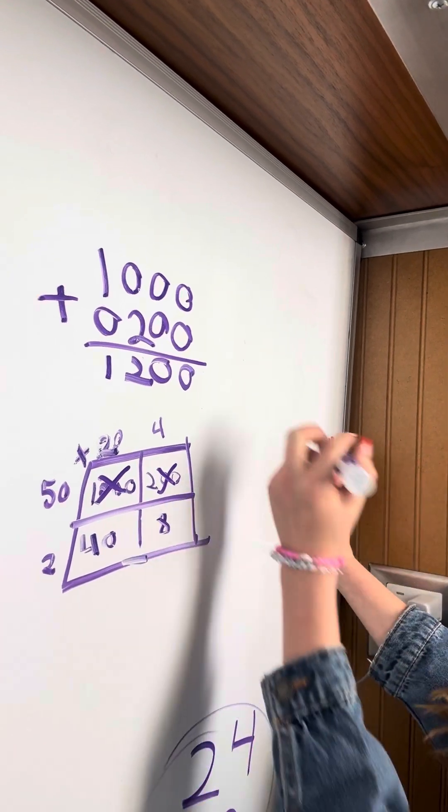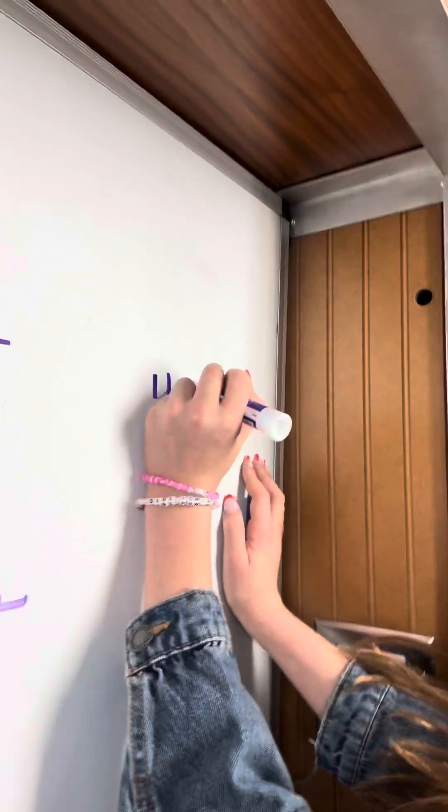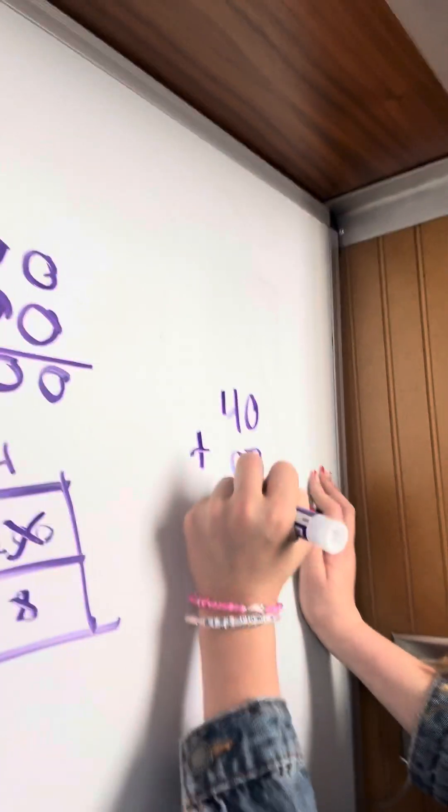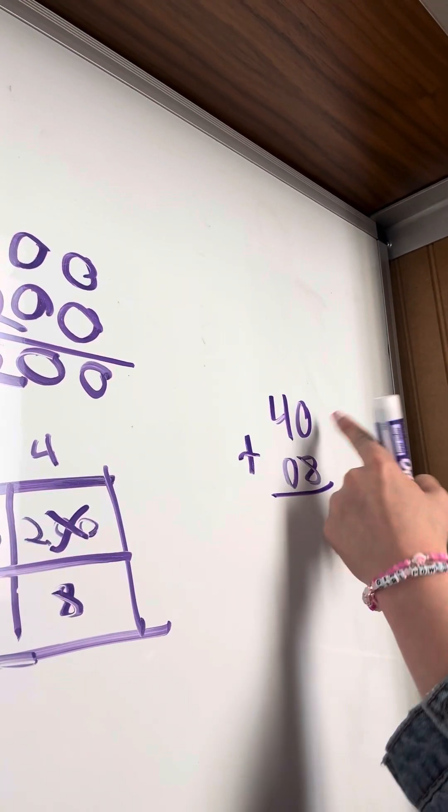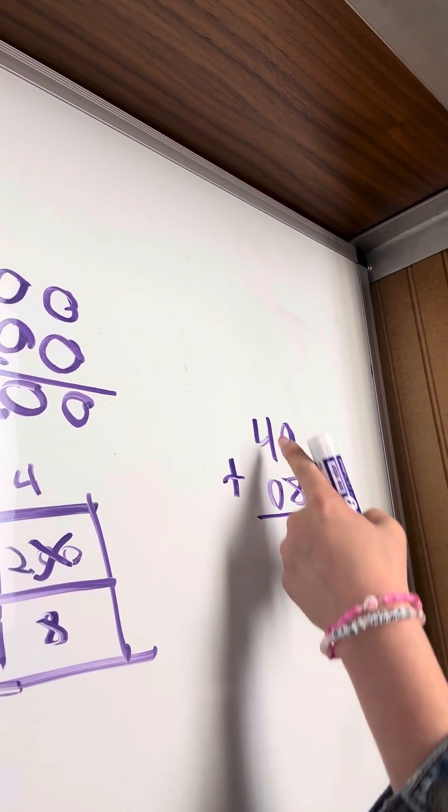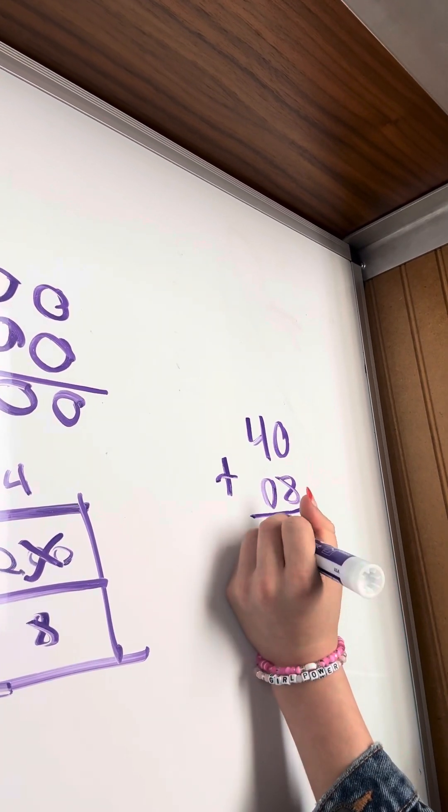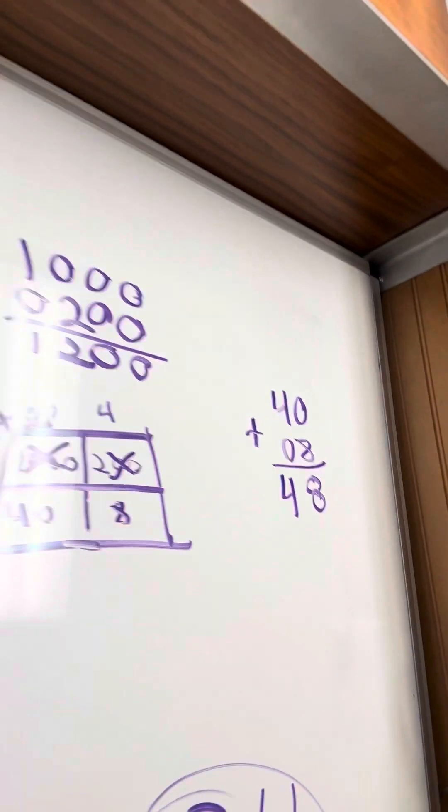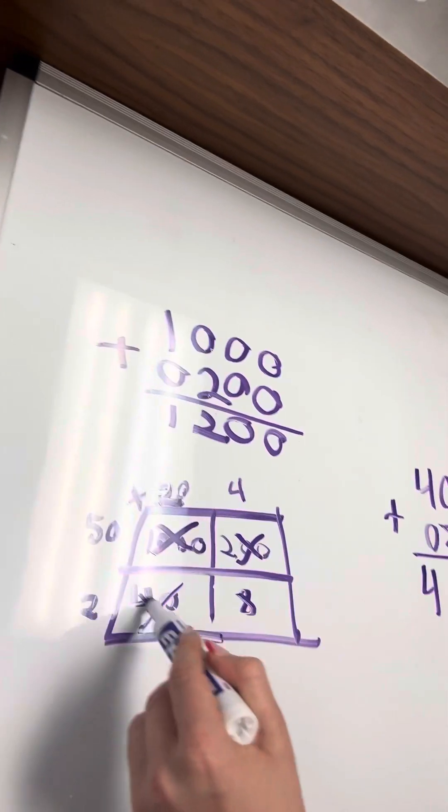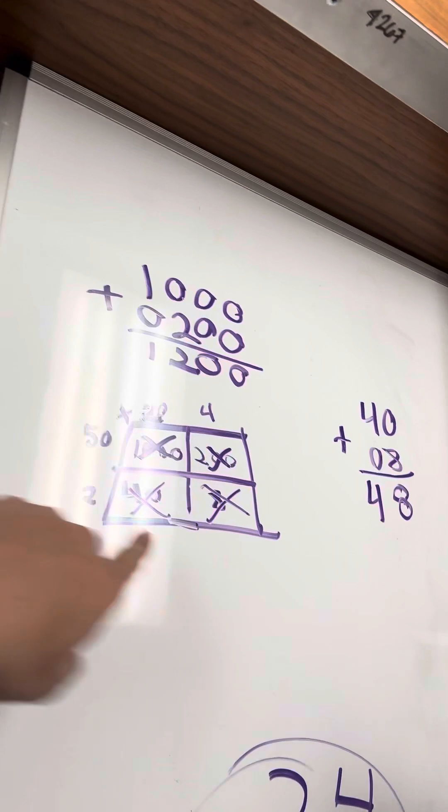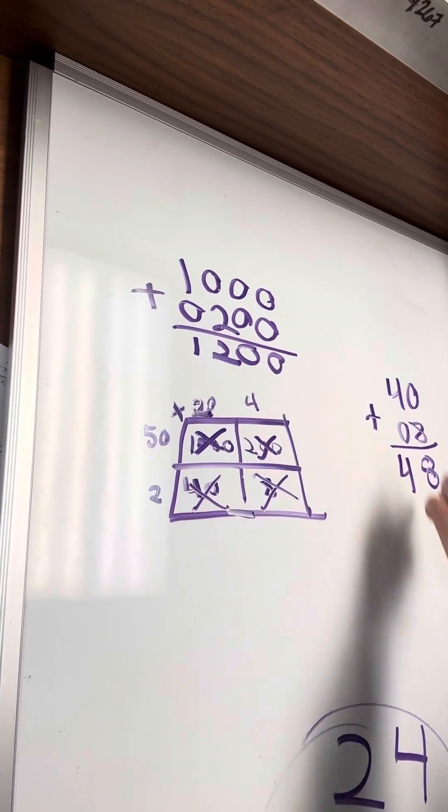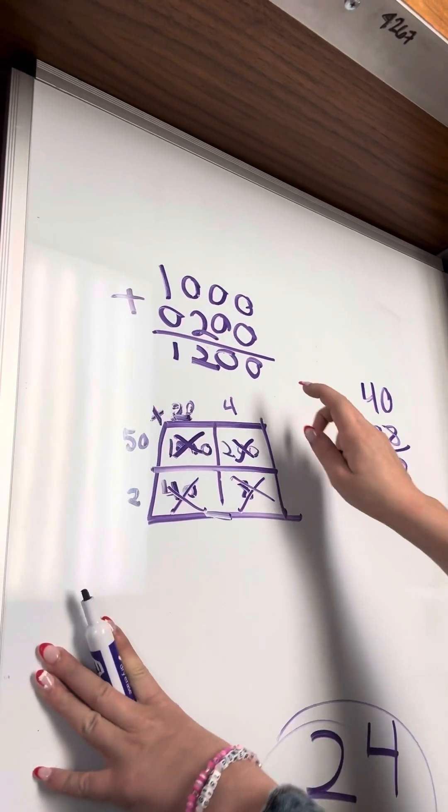Now we're going to come over here where there's nothing and do 40 plus 8. So now we're going to do 8 plus 0, I know that's 8. So now we're going to do 4 plus 0. So now you added this 2 and that's 48, and you added those 2 and that's 1,200. So now you have all of them, then you're going to add all four together, right?